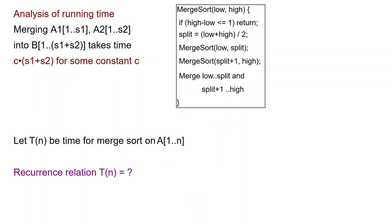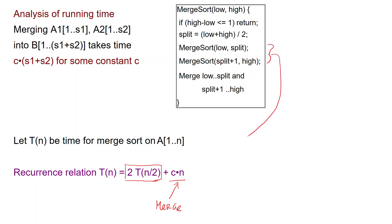Rather than writing down the time in closed form immediately, I will write a recurrence relation. If I want to sort an array with N elements, we divide it into two arrays of size about N/2 and then merge them. This gives the relation T(N) = 2·T(N/2) + C·N, where C·N is the time to merge and 2·T(N/2) comes from the two recursive calls. This is a recurrence relation, and it is not immediately clear how large it is — is it N, N squared, or something else? Analyzing such recurrences is an important task we will face many times in this class.